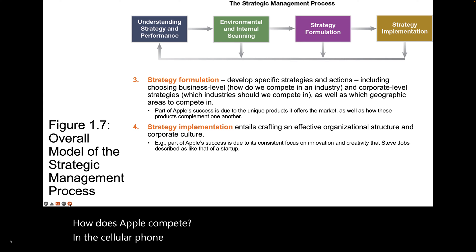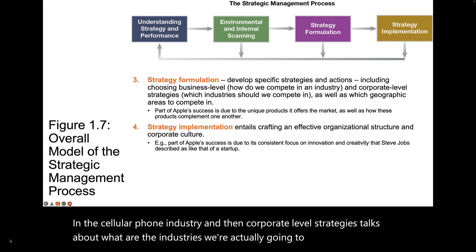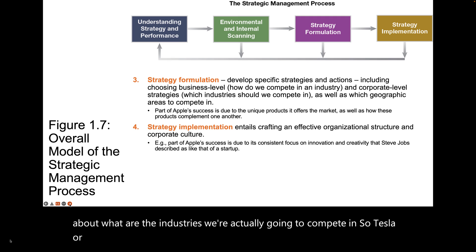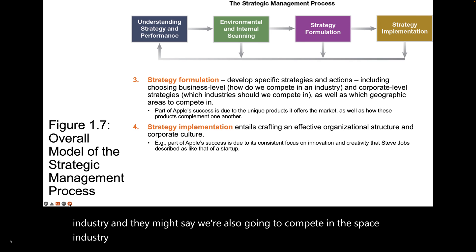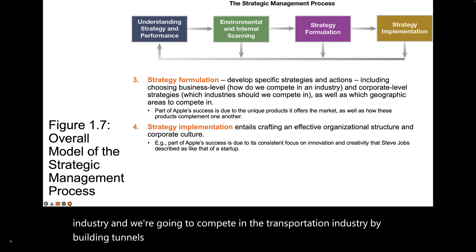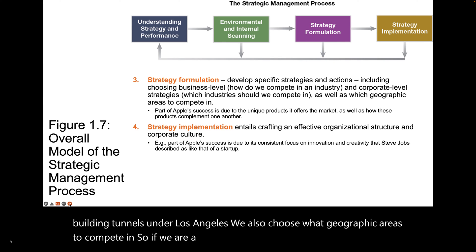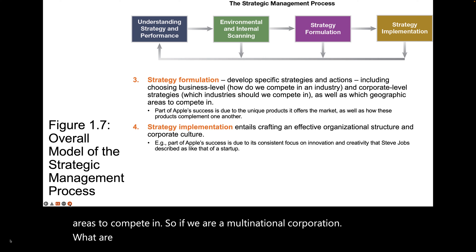Corporate level strategies talk about what industries we're actually going to compete in. Tesla or Elon Musk might say we are going to compete in the automotive industry, and also in the space industry and in the transportation industry by building tunnels under Los Angeles. We also choose what geographic areas to compete in — if we are a multinational corporation, what are the countries and continents where we choose to operate?